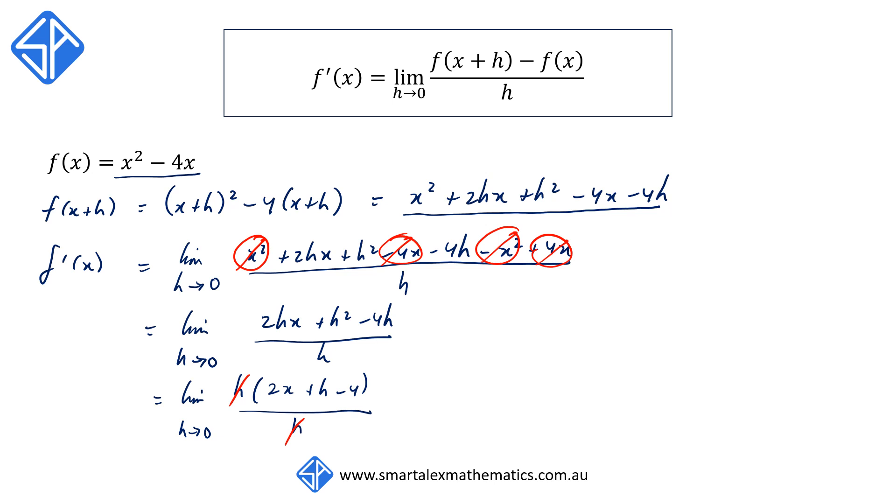when we take the limit as h goes towards 0 by subbing h = 0 into the expression 2x + h - 4, we're going to get 2x - 4.